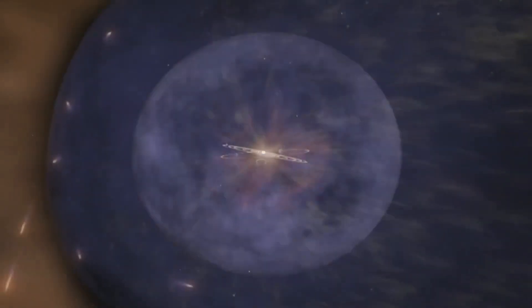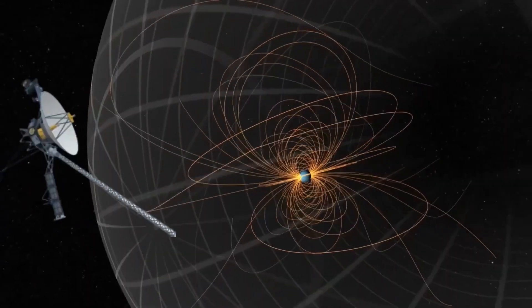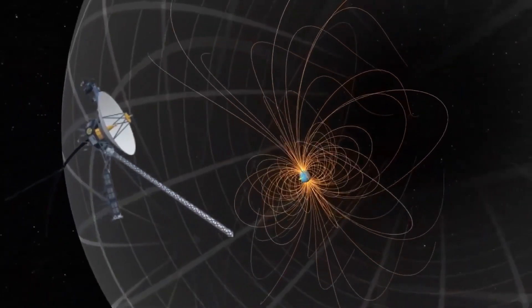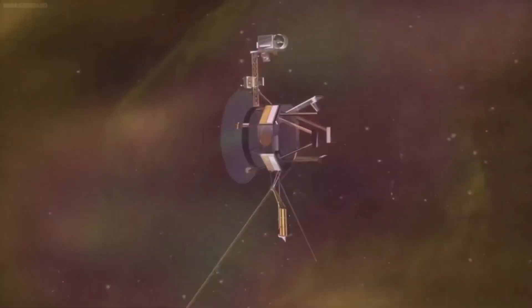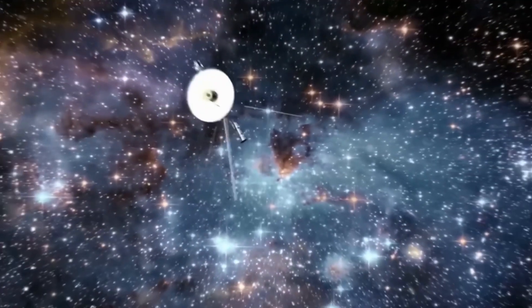Voyager 2 didn't find silence beyond the sun's reach. It found strange fluctuations, ghost-like pulses of cosmic rays, plasma variations that don't match the sun's 11-year cycle. It's as if the spacecraft entered a place between places, a kind of magnetic twilight zone. And then came the impossible.